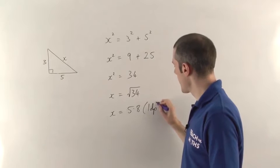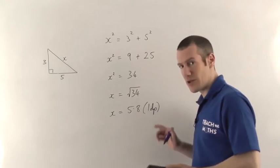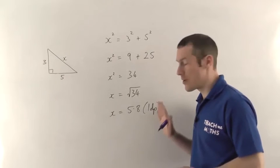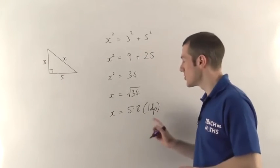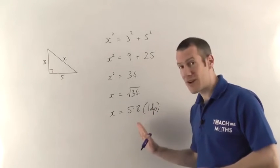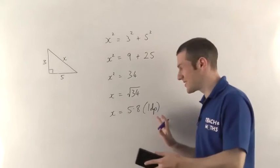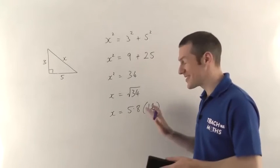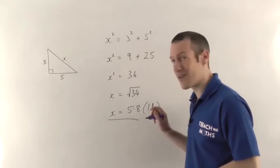Do be careful, with Pythagoras' questions, the answer is usually a long decimal number and you will have to round it. They'll probably tell you in the question how many decimal places or maybe significant figures to use when rounding, but you must round it correctly or you're going to lose a mark there. Go and watch the rounding to decimal places and significant figures videos if you want to know more about that, but do make sure you round correctly.